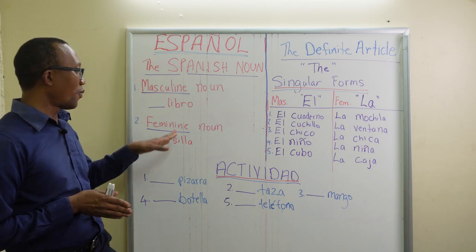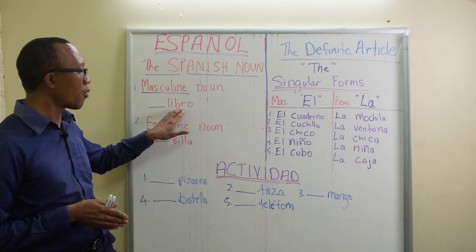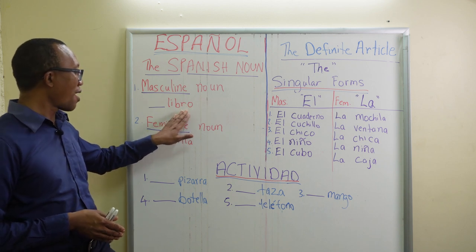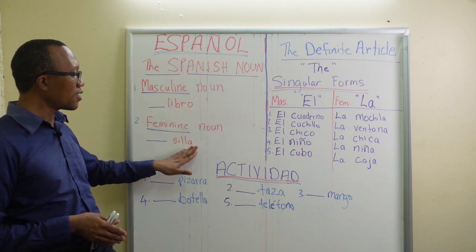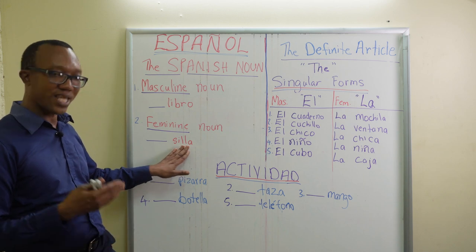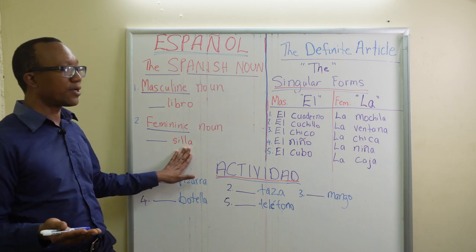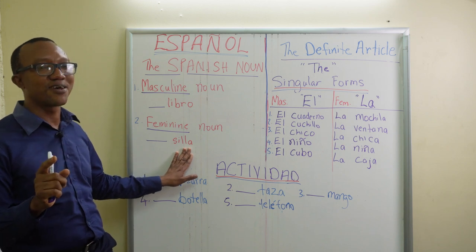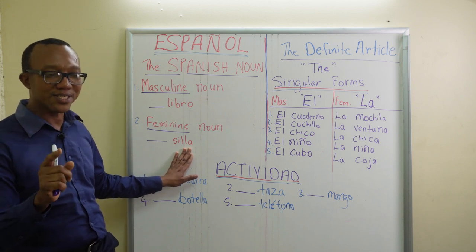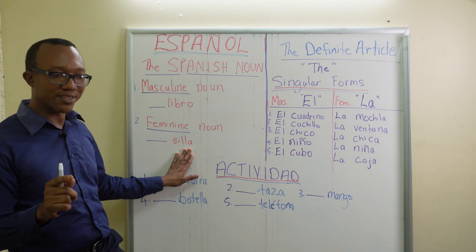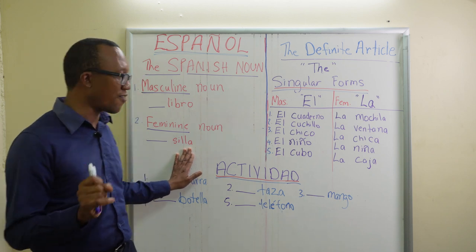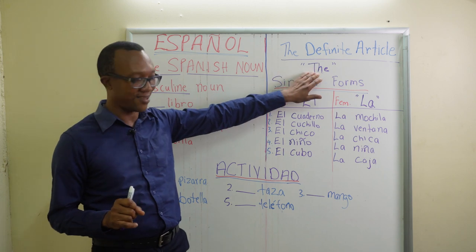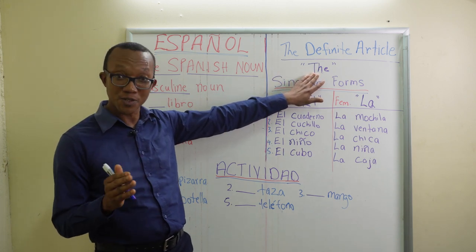We have an example of the word 'libro' on the masculine side, so we know it's a masculine noun. We have on the feminine noun 'silla,' so yes it's a feminine noun. But there is something else that always tells us whether a noun is masculine or feminine, and it is the definite article used in front of the noun.